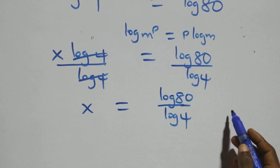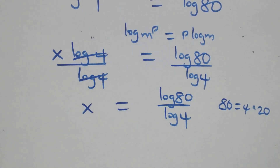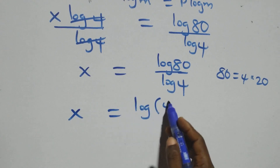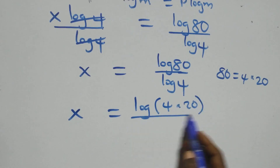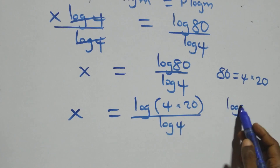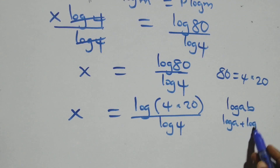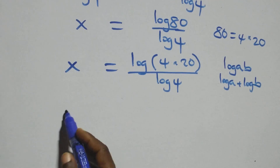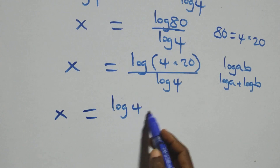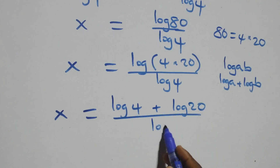From here, I write 80 as 4 times 20. So x equals to log of 4 times 20, over log 4. This follows the log product rule: when we have log a times b, this is the same as log a plus log b. So we have x equals to log 4 plus log 20, all over log 4.